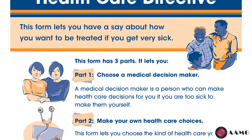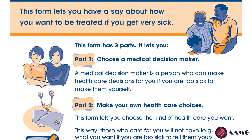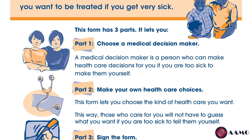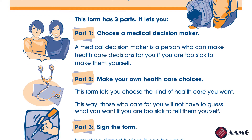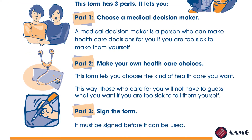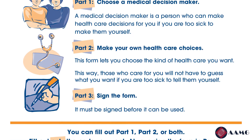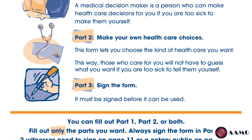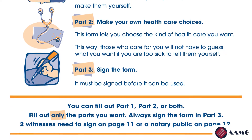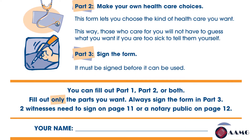On this first page of the form, it explains the three different parts of the advanced healthcare directive. Part one is 'Choose a Medical Decision Maker.' Part two is 'Make Your Own Healthcare Choices.' Part three is 'Sign the Form.' Please note that you may fill out only the parts of the form that you want and feel comfortable with — either part one, part two, or both part one and two.